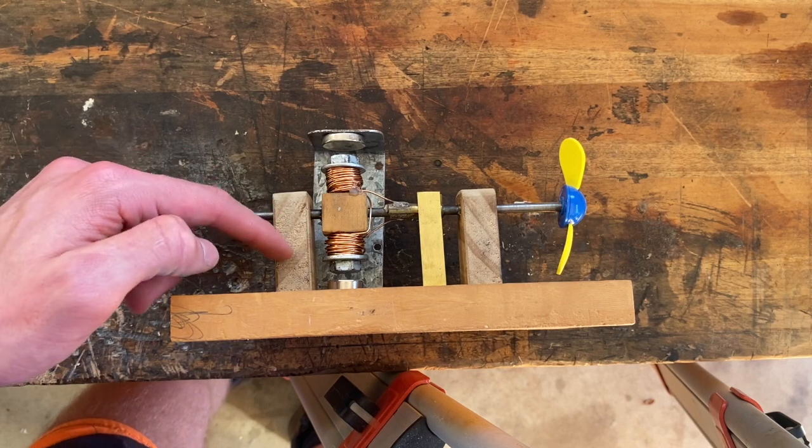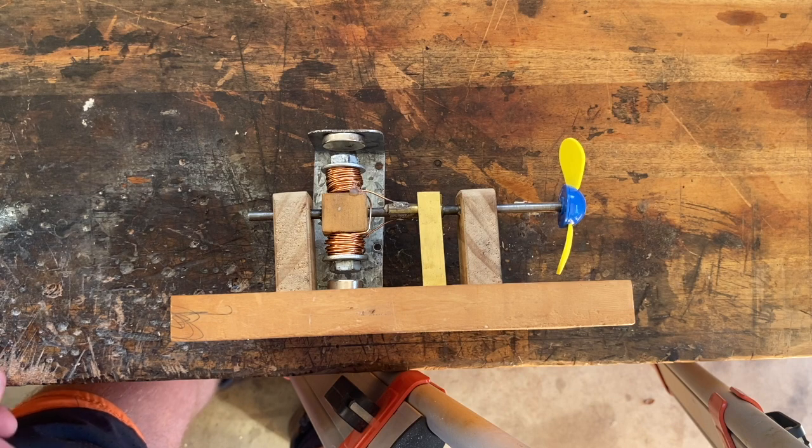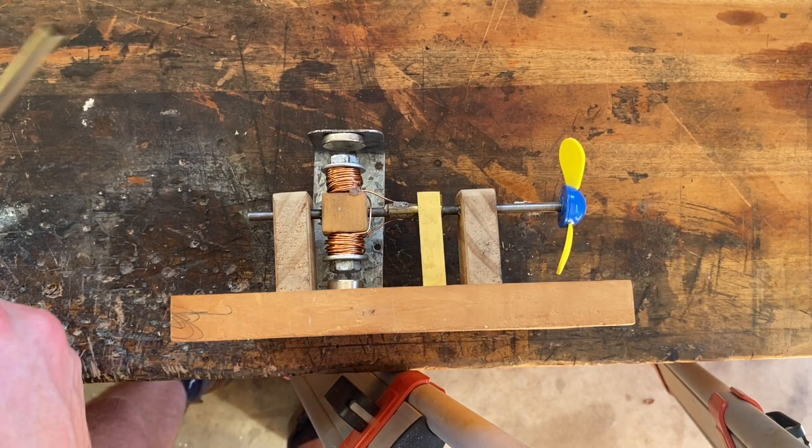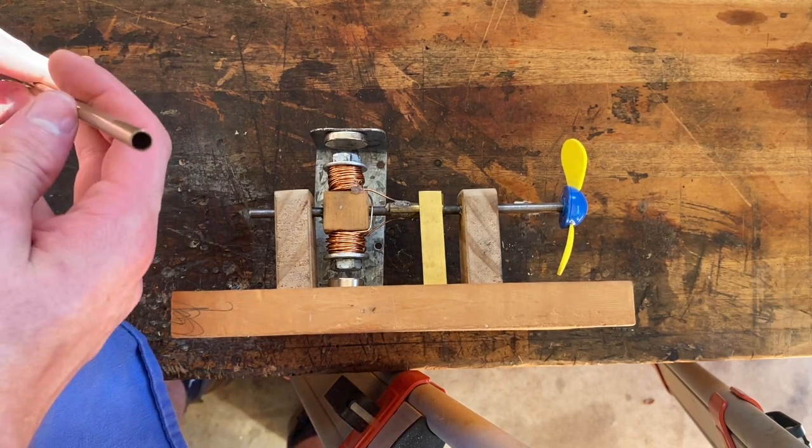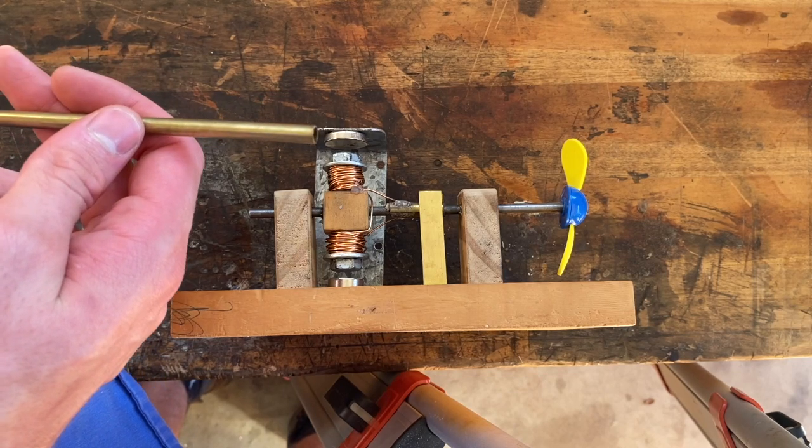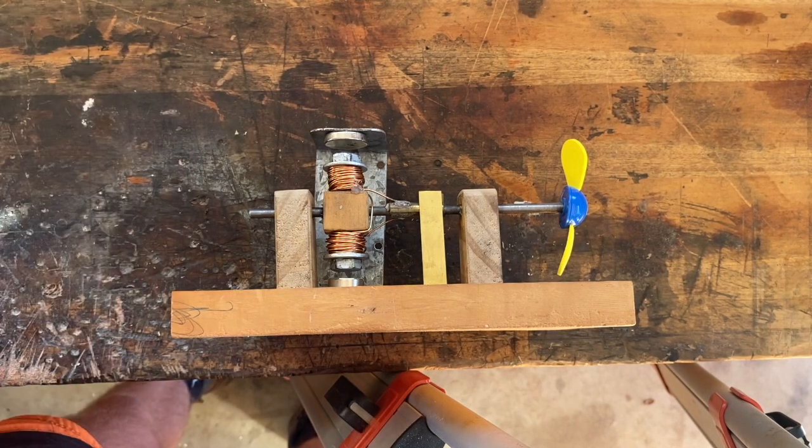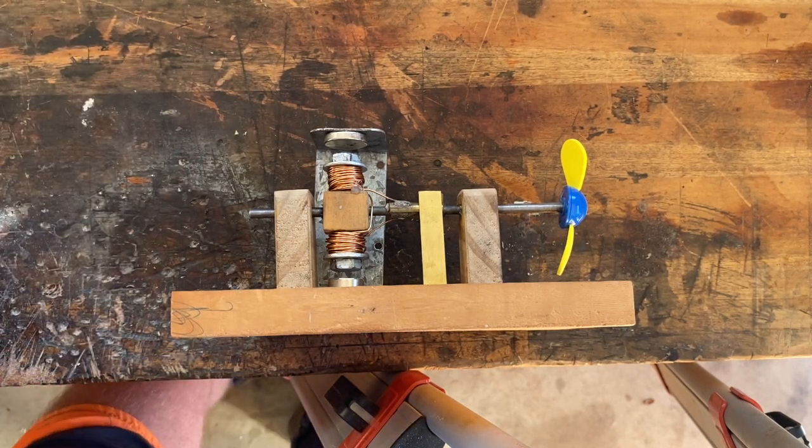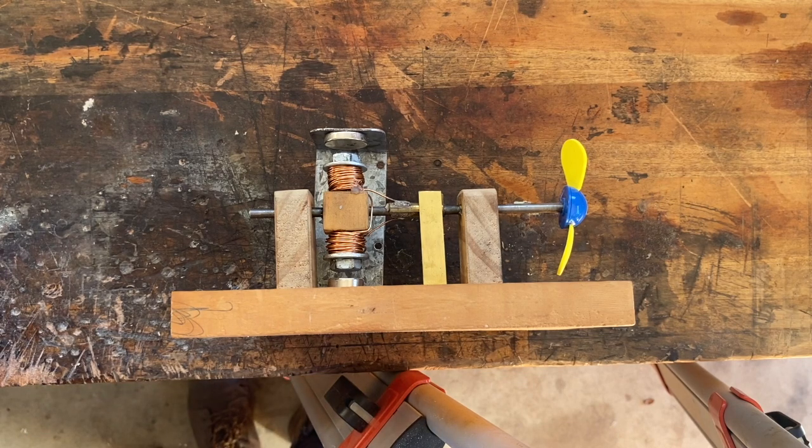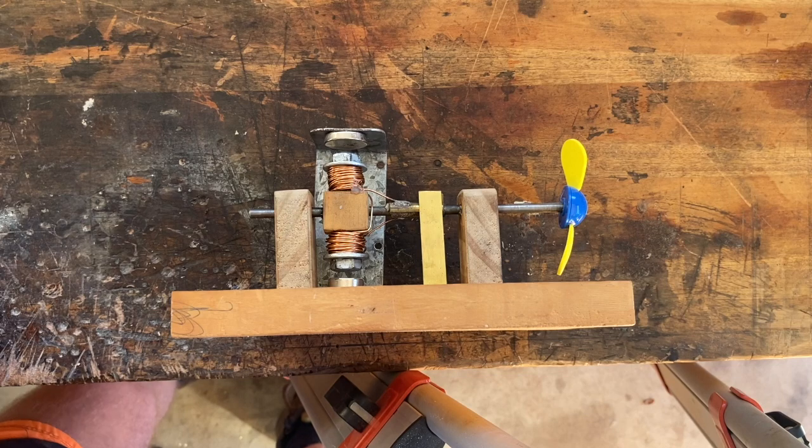That's then supported by these two timber supports there, and they just have a brass tube going through each of them to act as a kind of bushing to help reduce the friction. Now ball bearings would be better, but they can be hard to find as scrap.